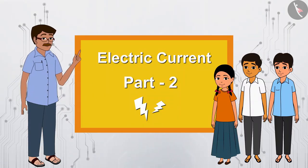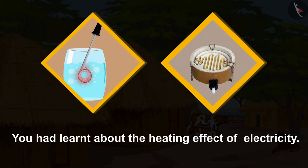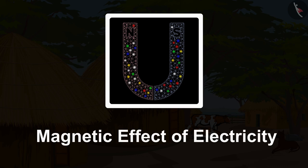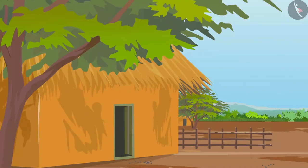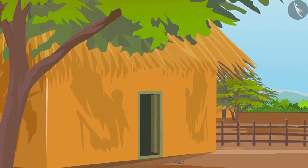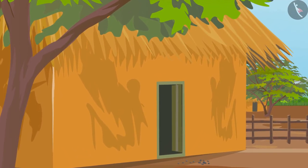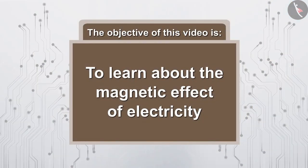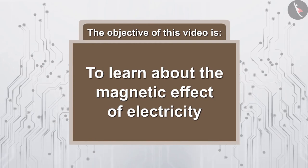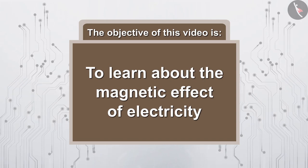Electric Current Part 2. Hello children. In the previous video, you had learned about the heating effect of electricity. In this video, you will learn about the magnetic effect of electricity. The objective of this video is to learn about the magnetic effect of electricity. To discuss about this, we will go to Rampur and visit Raghu and Ram.